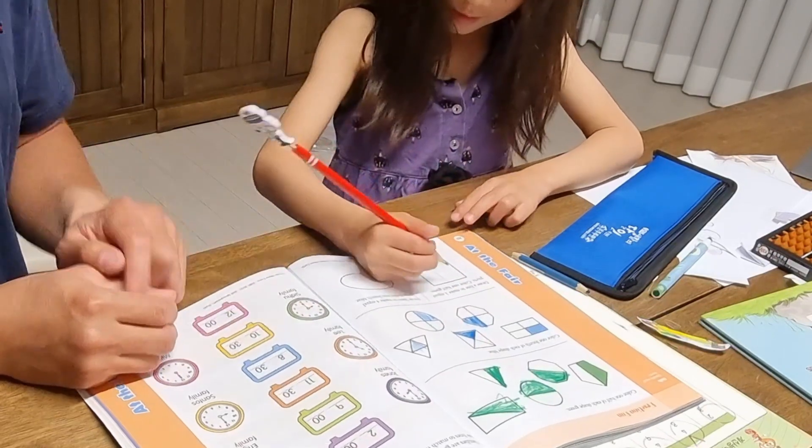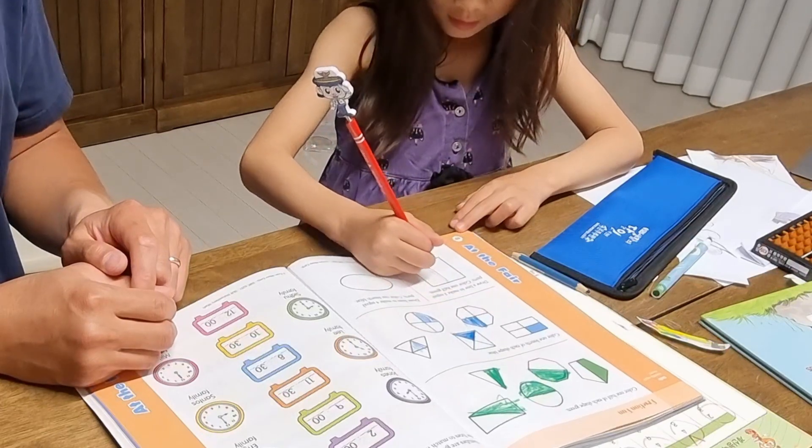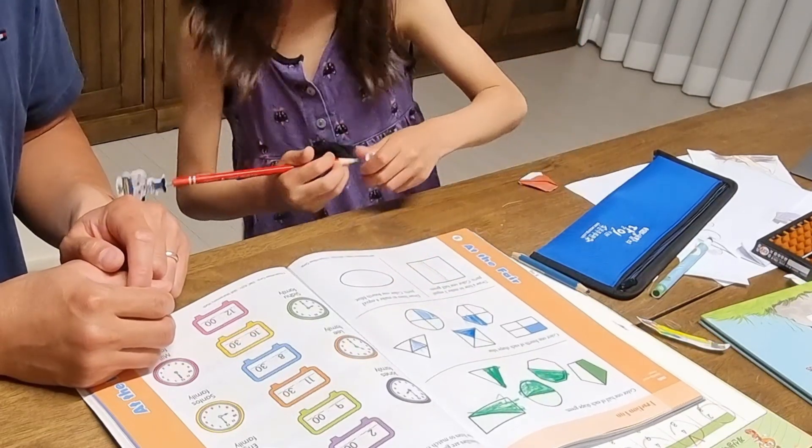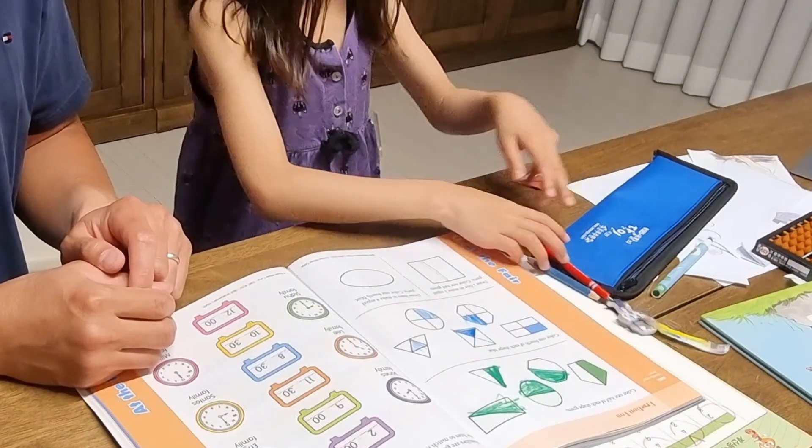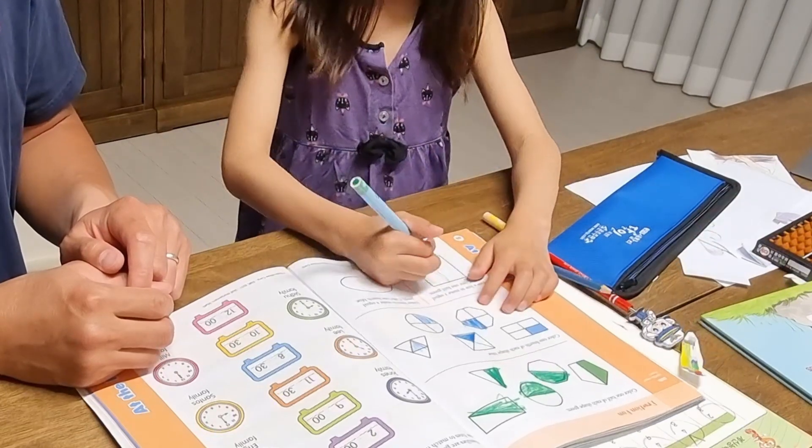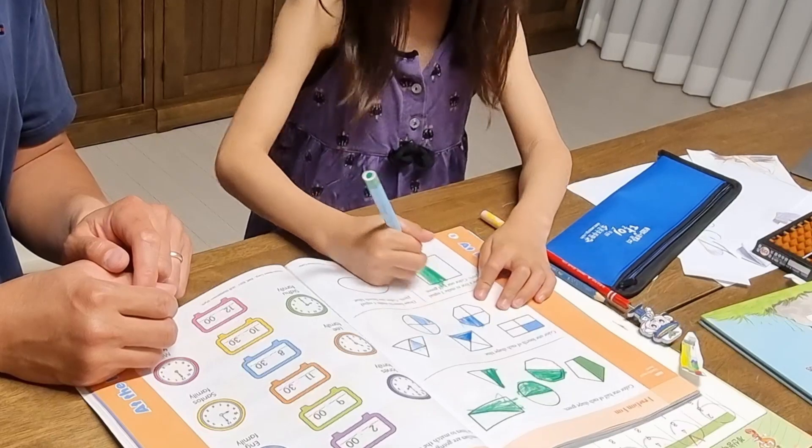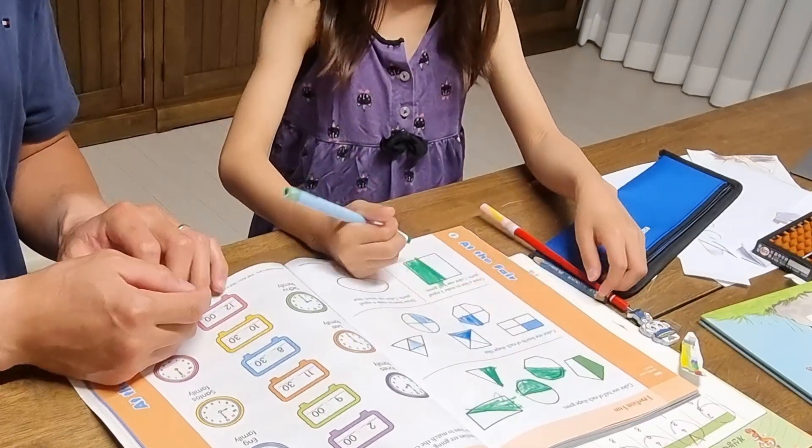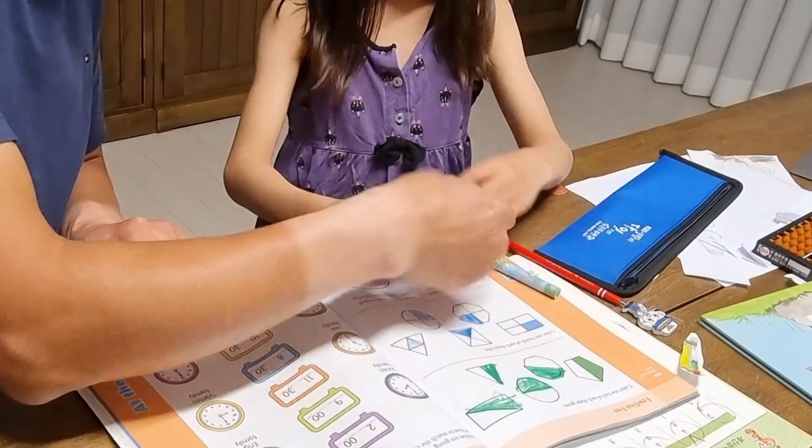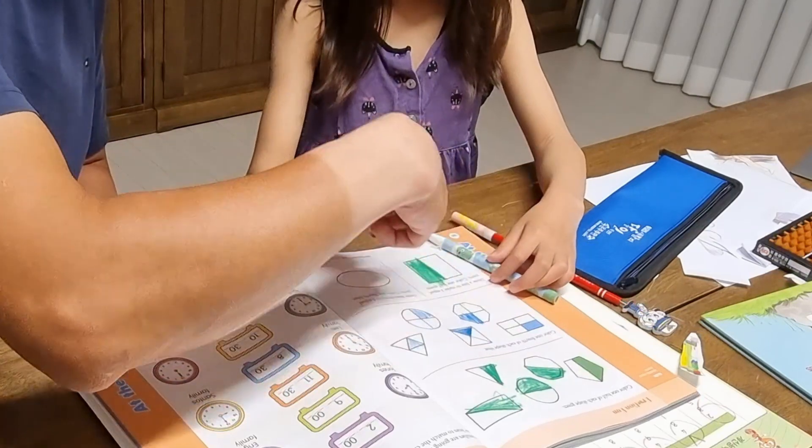Good job, yes, that's okay. And then color half green. It's the correct answer, but there is another way to divide this square, like this.